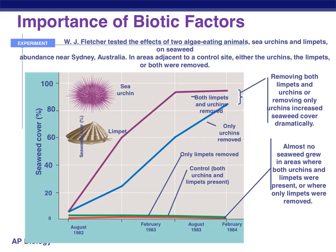Because ecology is really all about how organisms interact with each other, we're going to look at this graph for a little bit. We're looking at seaweed cover, and I want you to picture an area on the ocean floor covered in seaweed. We're looking at how much of that area is covered depending on the presence of one, both, or neither of two living organisms: the sea urchin and the limpet. Both of these are algae-eating and can also eat seaweed. They looked at various concentrations of these organisms to see what was happening.